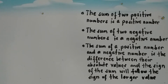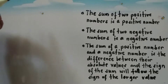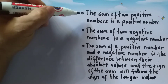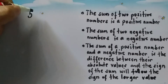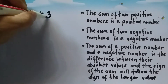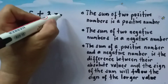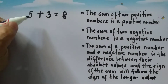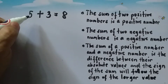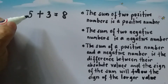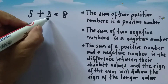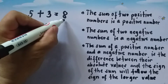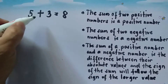We'll now talk about addition of integers and we have three rules to follow. The first rule is: the sum of two positive numbers is a positive number. Say if we have positive five plus three, then the result is positive eight. For example, if we have COVID-19 cases, say we have five positive cases followed by three positive cases, then we have a total of eight positive cases.